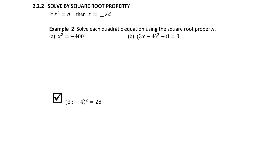The square root property goes something like this: if x squared equals d, where d is some real number, then x is equal to plus or minus the square root of d. We've actually taken the square root of both sides. The idea in solving by the square root property is you're going to have a quadratic term, you'll be able to isolate it, and the only thing left over is a constant—you're not going to have any linear or x terms. So you've got a quadratic term and a constant term only.